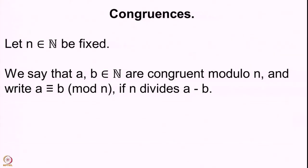Welcome back. We almost began our new theme in the last lecture, which is on congruences. We gave the very basic definition: two natural numbers being congruent to each other modulo a third given and fixed natural number n. The definition is that whenever we fix n, any two natural numbers a and b are said to be congruent to each other modulo n if n divides the difference a minus b.